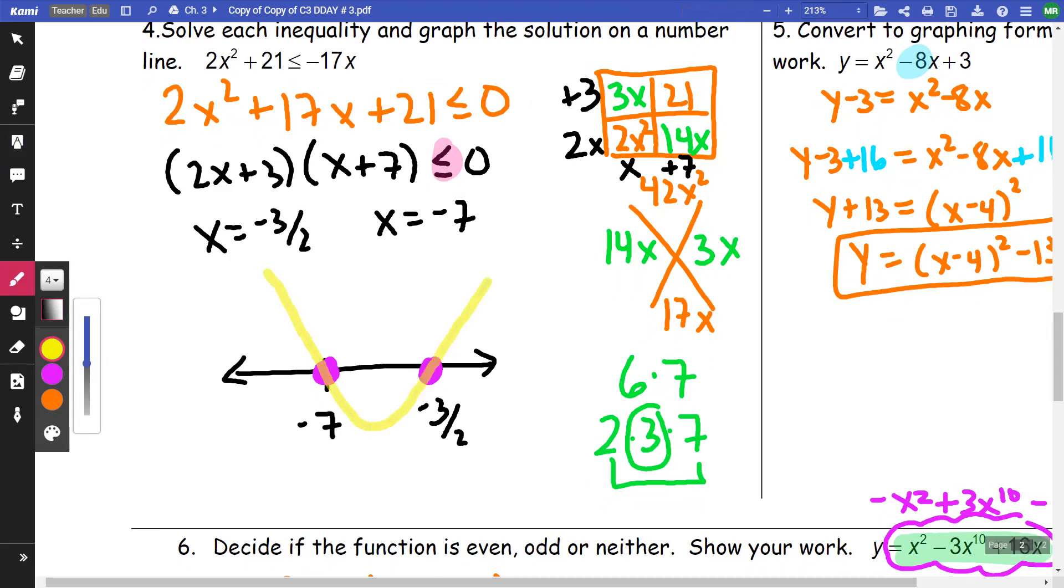So if I draw an open up parabola, I want where it's less than or equal to 0. So that is going to be in between here. And so I'm going to be shading from negative 7 to negative 3 halves.